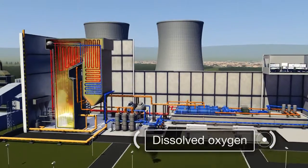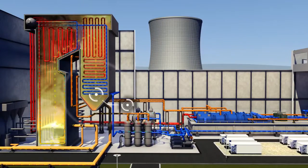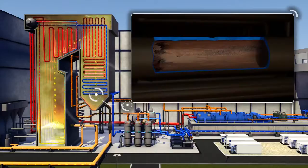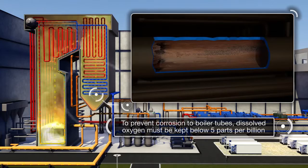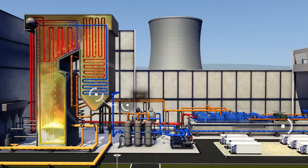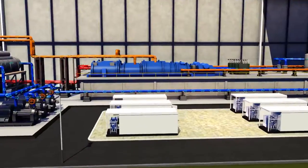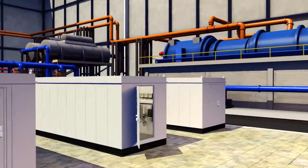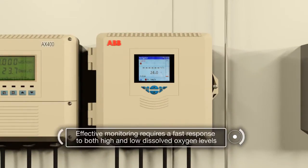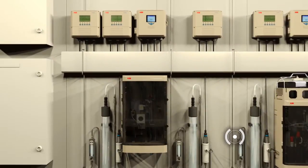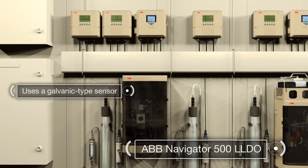Dissolved oxygen is highly corrosive to most metals, especially the mild steel used for boiler tubes. To minimise its impact, its levels need to be reduced to 5 parts per billion or less. The dramatic variations in oxygen levels during the load cycle of a plant require an analyser offering a fast response across both high and low dissolved oxygen concentrations.